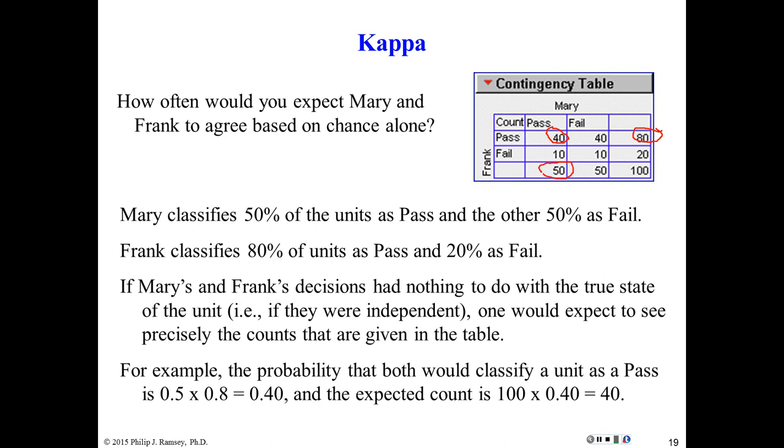How about failing? We can do a similar calculation. Mary failed 50 of them. Frank, 20. So if we take 0.5 by 0.2, again, think of it as tossing two coins. They should both get tails 10% of the time. That's exactly what they did. Here, intuitively, is what's going on. It looks like the agreement between Frank and Mary can be entirely attributed to random chance.